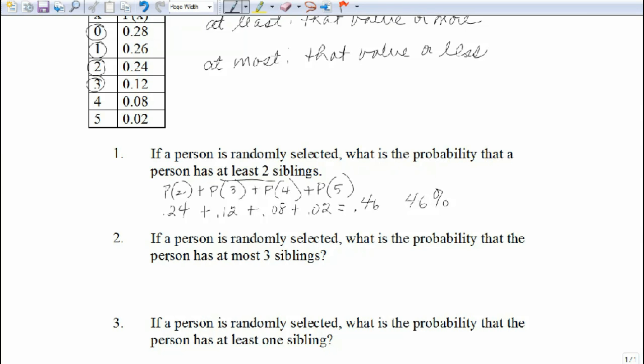So there's that or again. So again, we're going to be adding our probabilities. And we come up with 0.12 plus 0.24 plus 0.26 plus 0.28. Adding them together, we get 0.9 or 90%.